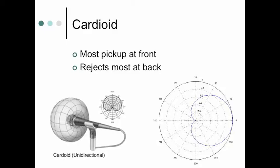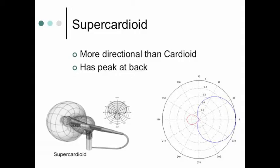Cardioid polar pattern. Now, it's called cardioid for a very good reason. As you can see here, this shape here kind of starting to resemble a heart. It picks up primarily in this direction over here. It rejects sound from behind itself. This is a cardioid. Picks up most from the front, rejects most from the back.